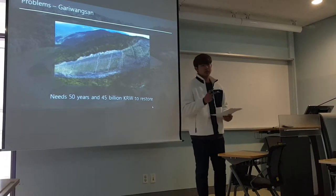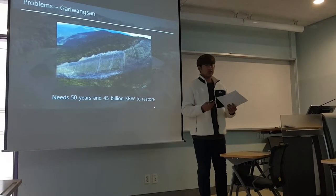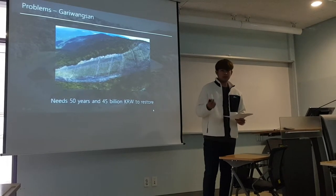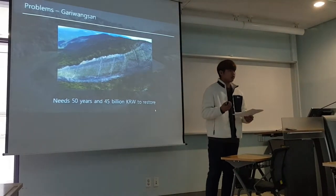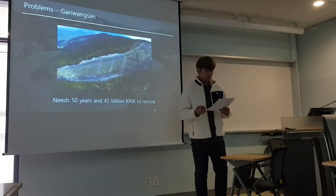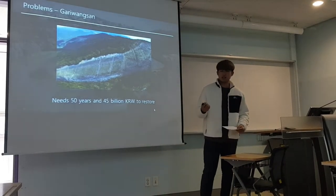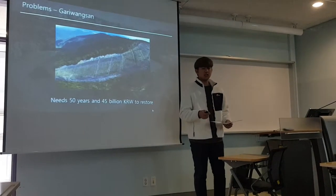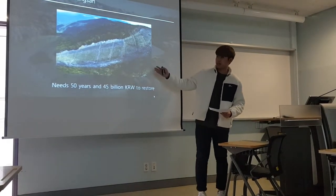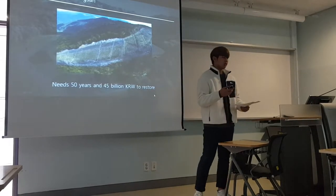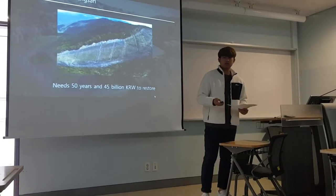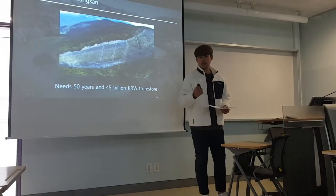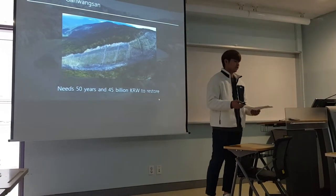I will show you two major problems caused by the PyeongChang Winter Olympics. One is from the preparation stage and the second is from the follow-up stage. First, the PyeongChang Olympic Organizing Committee decided to cut off 58,000 trees on Gariwangsan to build an alpine skiing trail, and it will take about 50 years and 45 billion Korean won to restore it to its original state.